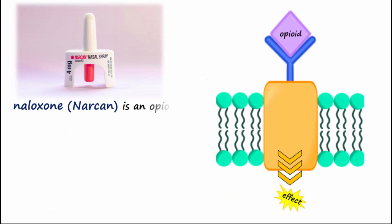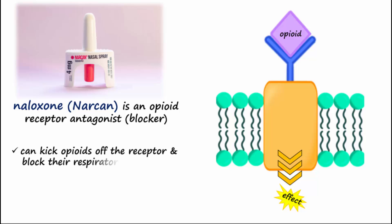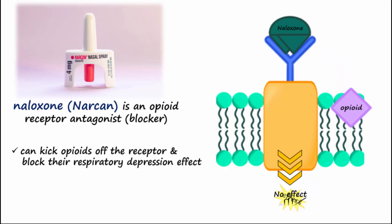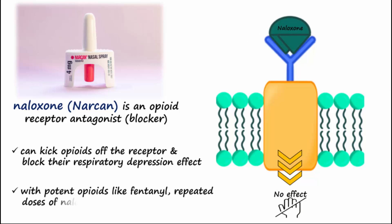Naloxone is an opioid receptor antagonist with high affinity for the opioid receptor and can kick opioids off the receptor, blocking their respiratory depression effect. With potent opioids like fentanyl, repeated doses of naloxone may be needed.